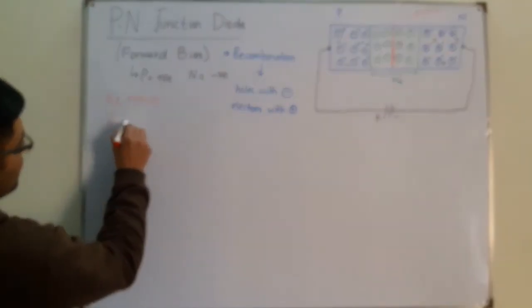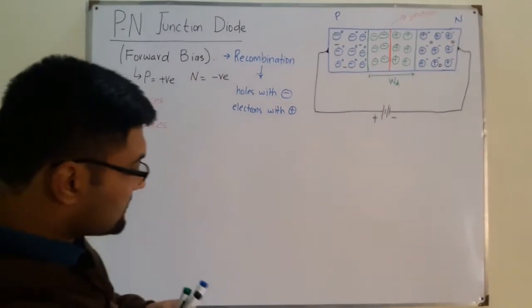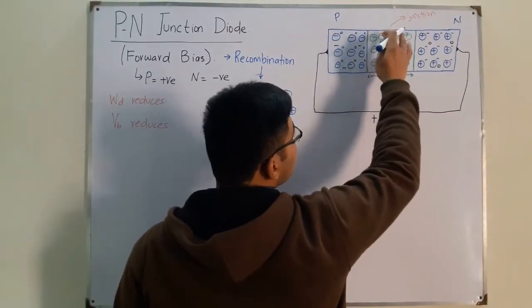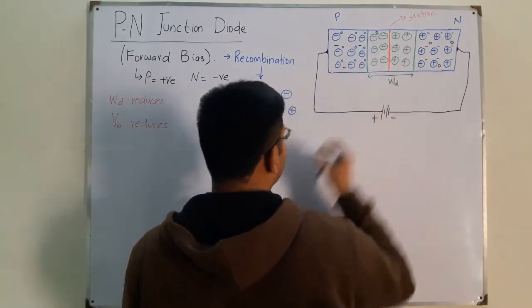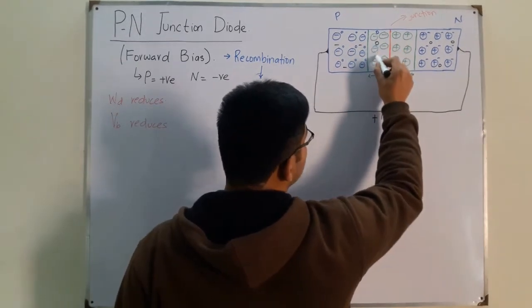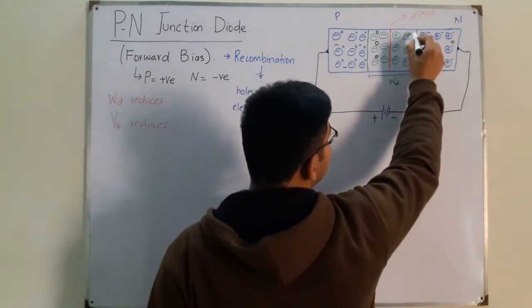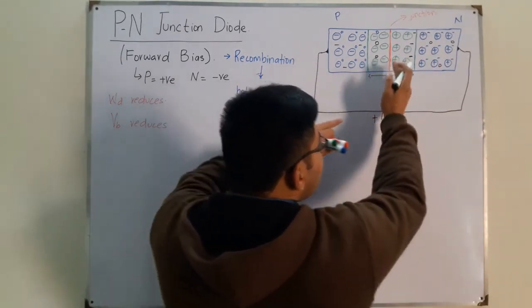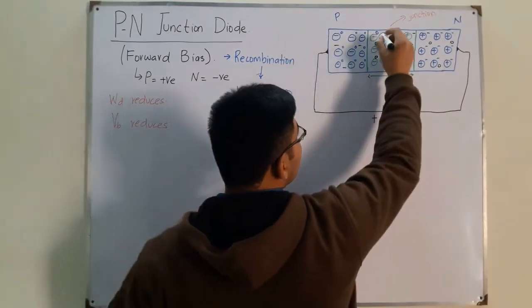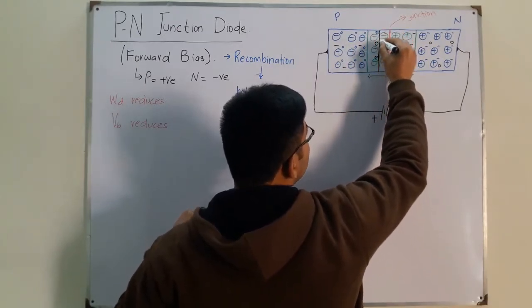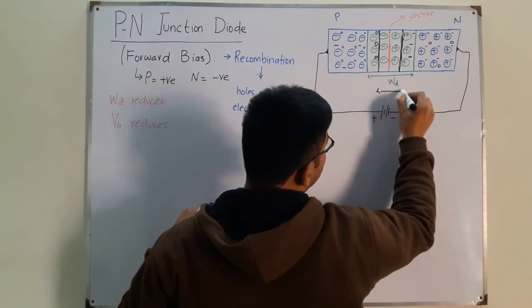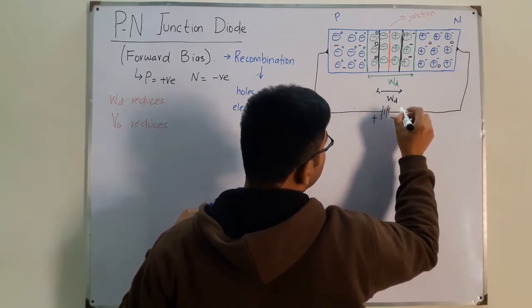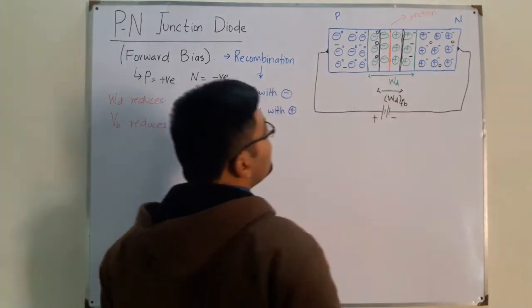We had an associated electric field in the depletion region which we termed as the barrier potential. So if this width reduces, the barrier potential VB also reduces. Let me draw it — the previous depletion region had holes and electrons that have now recombined. This part has become part of the N-type material and this part has become part of the P-type material, giving us a new, narrower depletion region.